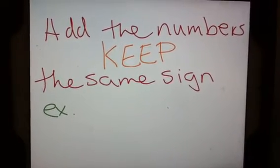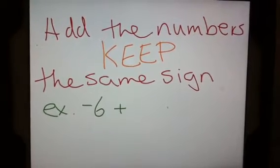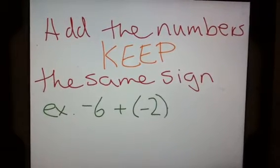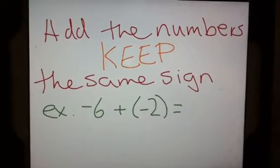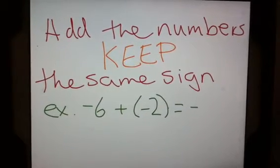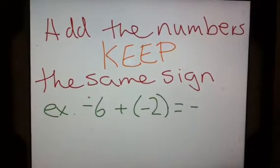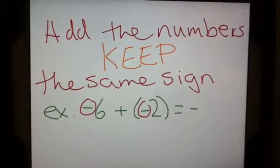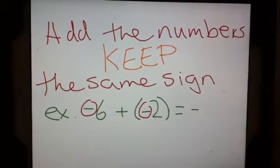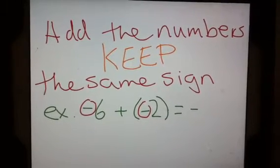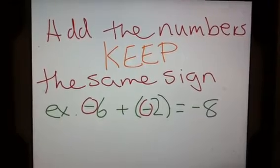For example, if I have negative 6 plus a negative 2, I already know that my answer is going to be negative because both of my signs are negative. So negative 6 plus a negative 2 equals negative 8.